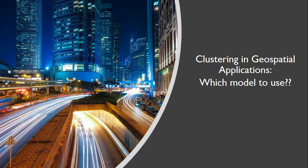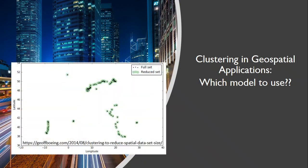Geospatial clustering is becoming increasingly common. Some important applications include reducing the size of large location datasets and understanding large-scale mobility patterns through taxi trip clustering for urban planning and transportation. Clustering models have been widely used in unsupervised machine learning applications, but how do we know which clustering methods work best for geospatial applications?